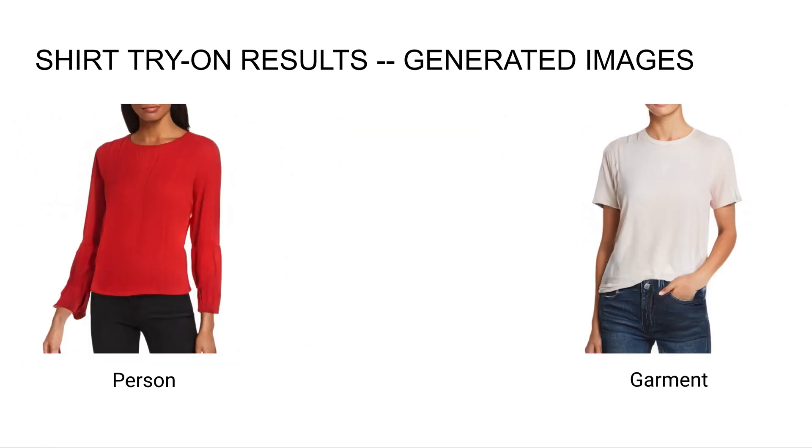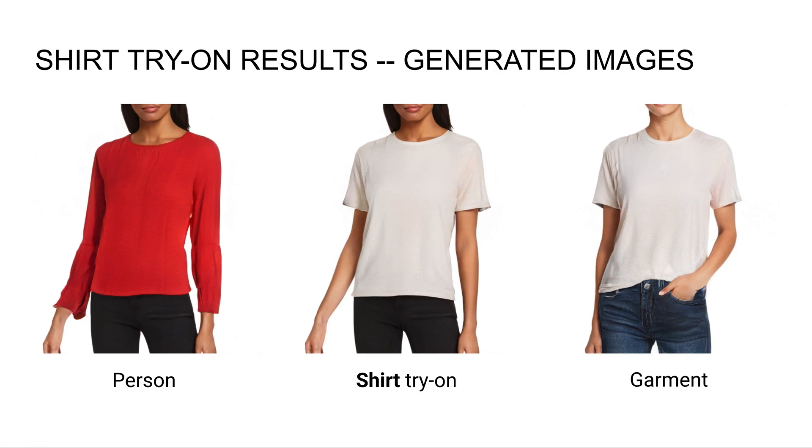Here we show that again we're able to synthesize skin on the arms when going from a longer sleeve to a shorter sleeve shirt. Again, we're able to preserve her pose, pants, identity, as well as capture the texture, color, and shape of the shirt.